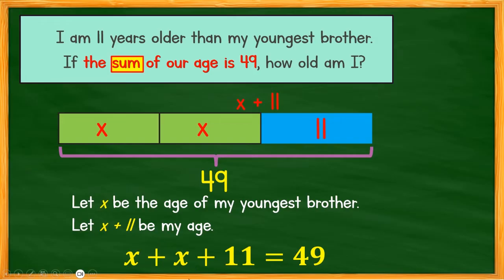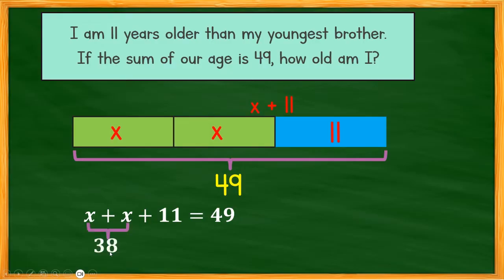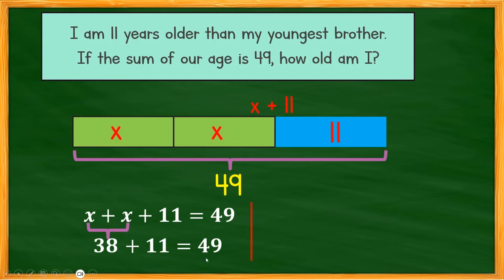The sum means we add: X plus (X plus 11) equals 49. Combining like terms, we get 2X plus 11 equals 49. Subtract 11 from 49: 49 minus 11 equals 38. So 2X equals 38. We divide by 2 because we have two values of X.